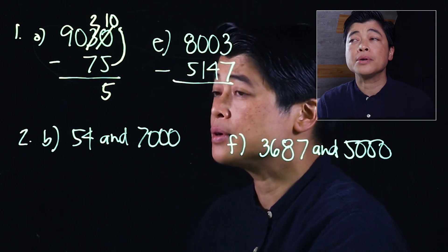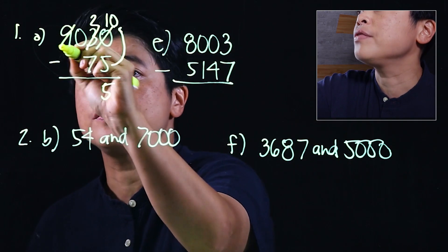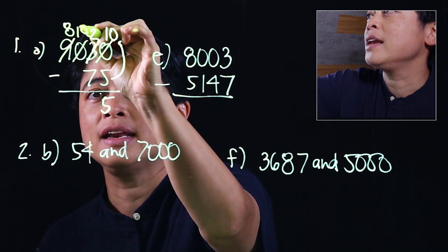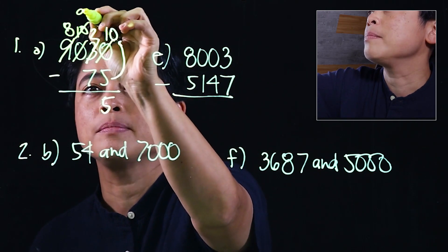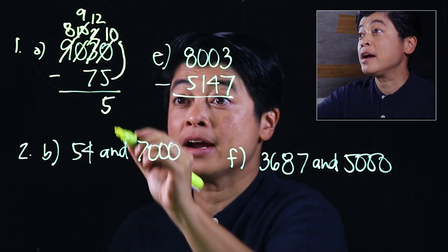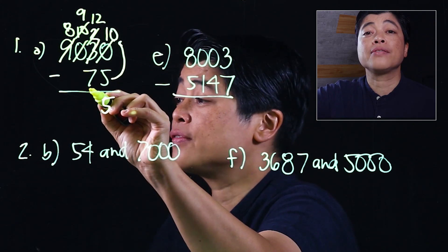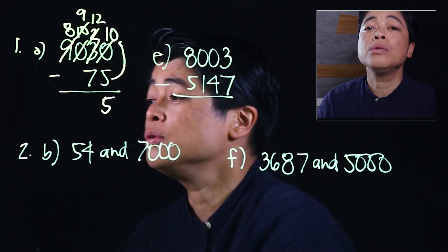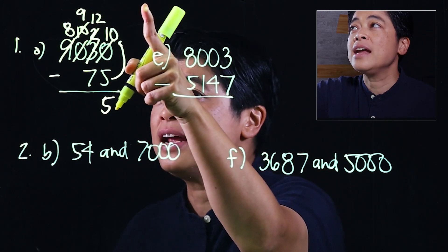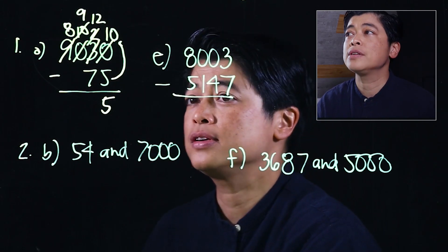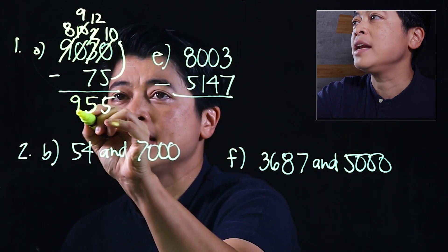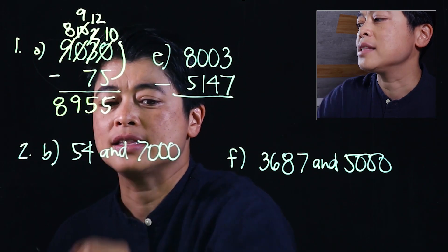We cannot take a seven away from two, and we cannot borrow from zero, so we need to borrow from the thousands — making that eight, making this ten. We borrow from that, making that nine and making this twelve. We start from the seven and need to get to twelve, so the seven needs a three and then another two, which makes it a five.